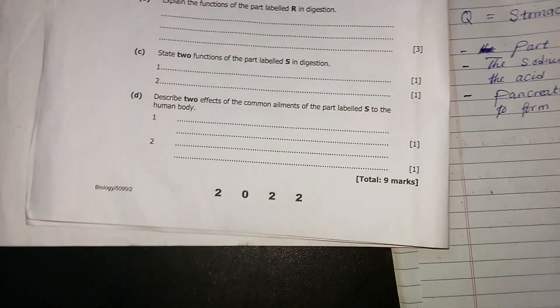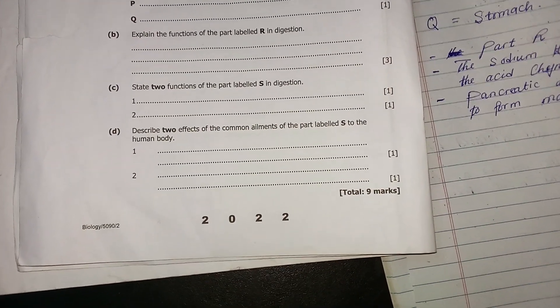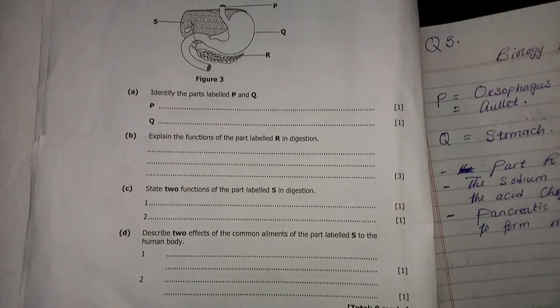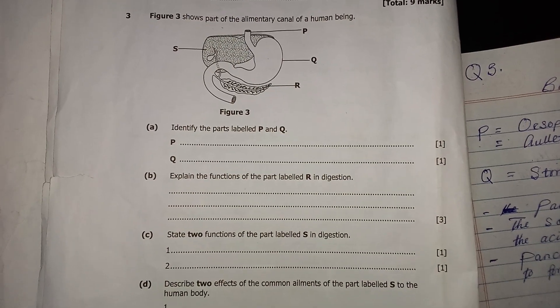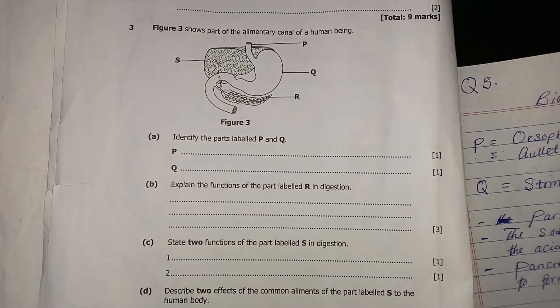We move on to C. C is saying, state two functions of the part labeled S. So the part labeled S is what is known as the liver.